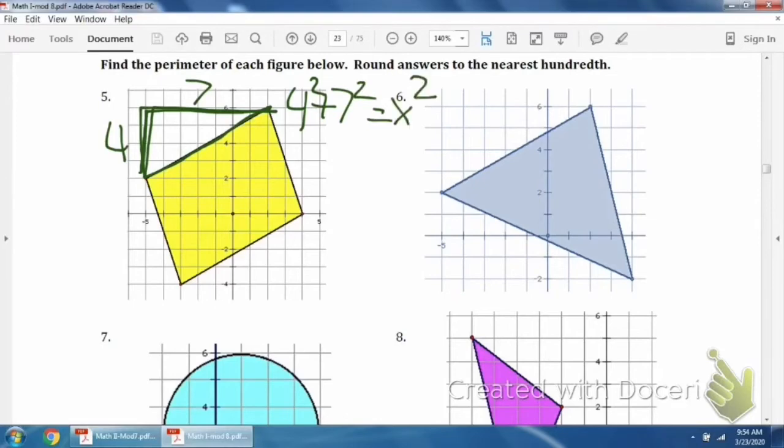And solve it. Okay, four squared is sixteen, seven squared is forty-nine. So we simplify those two and then add them together. Forty-nine plus sixteen is sixty-five.